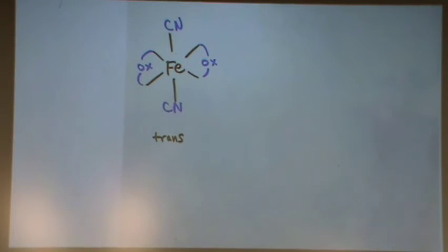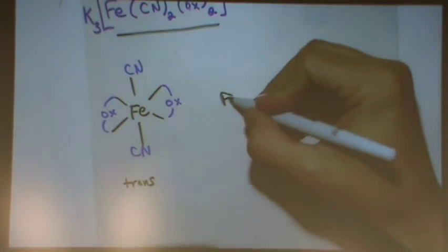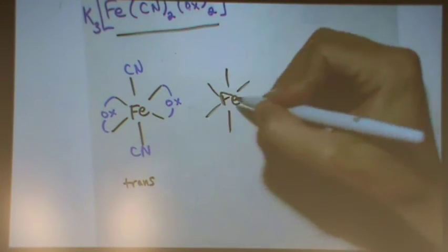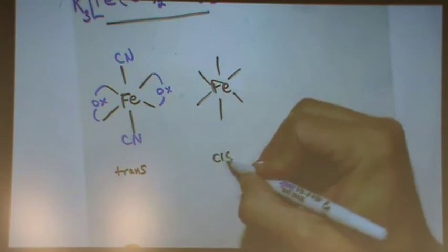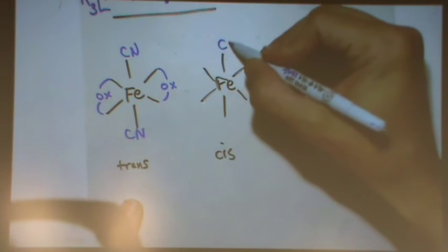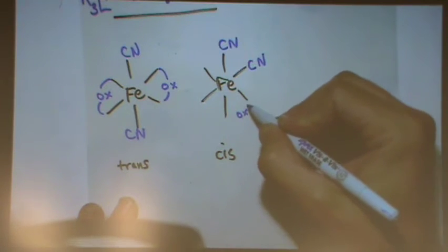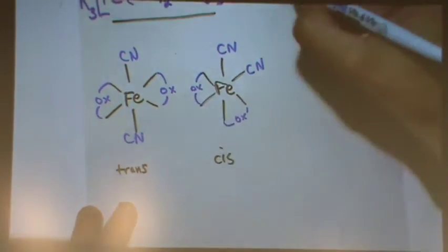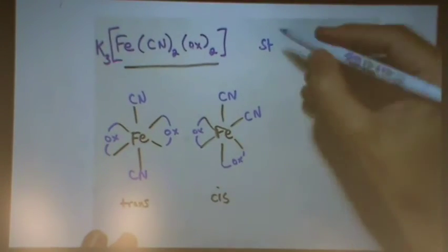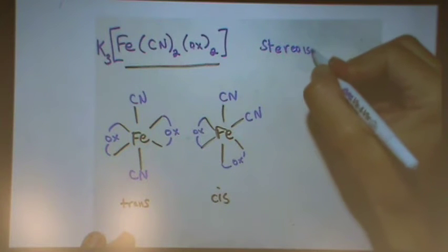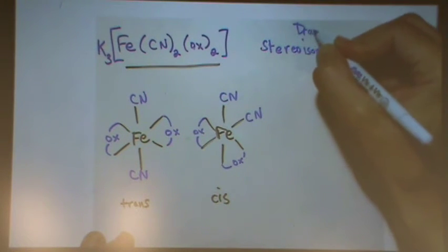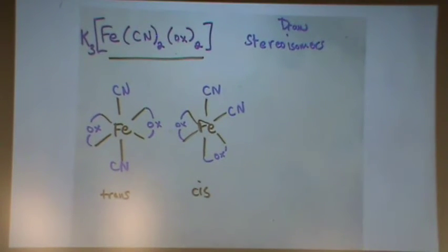Now let's draw the cis option. There's the cis option. Remember again, bidentates always attach cis, so I'm only changing the cyanide in this case. Am I done?